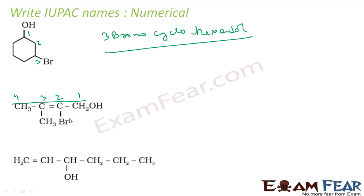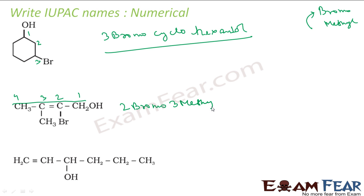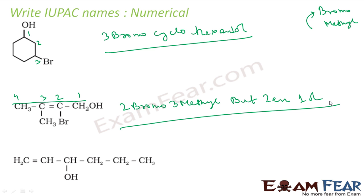The longest chain is one, two, three, four carbons. I have a bromo group and a methyl group. Alphabetically, B comes before M, so bromo comes first. At position two I have bromo and at position three I have methyl. There is a double bond at position two — but-2-ene — and OH at position one. The full name is 2-bromo-3-methylbut-2-en-1-ol.